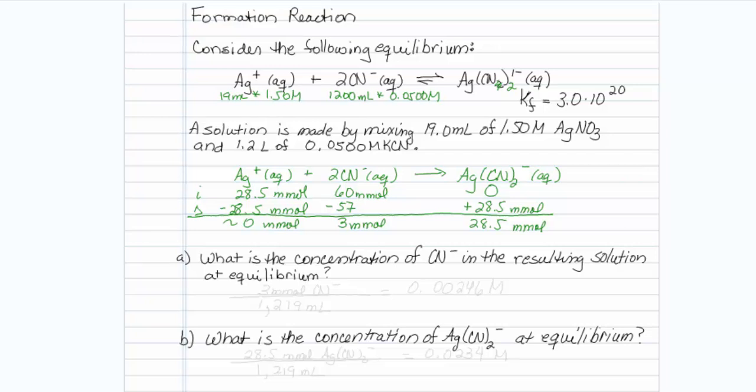Concentration of the cyanide at equilibrium. Well, it appears that I have 3 millimoles of my cyanide, and the total volume is, I want to stay in milliliters, 1219 milliliters. So 3 divided by 1219 gives me 0.00246 molar.